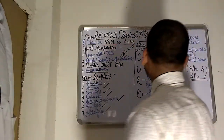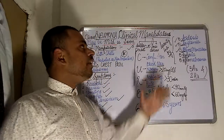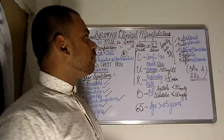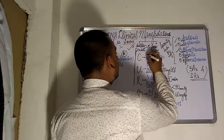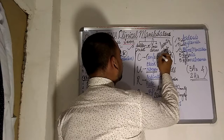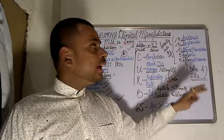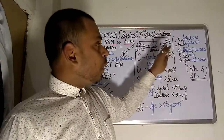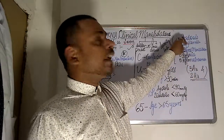Moving on to the severity of pneumonia — this can be better remembered using the mnemonic of three A's and two H's. Whether a patient with pneumonia is severe or not can be assessed by these three A's and two H's.